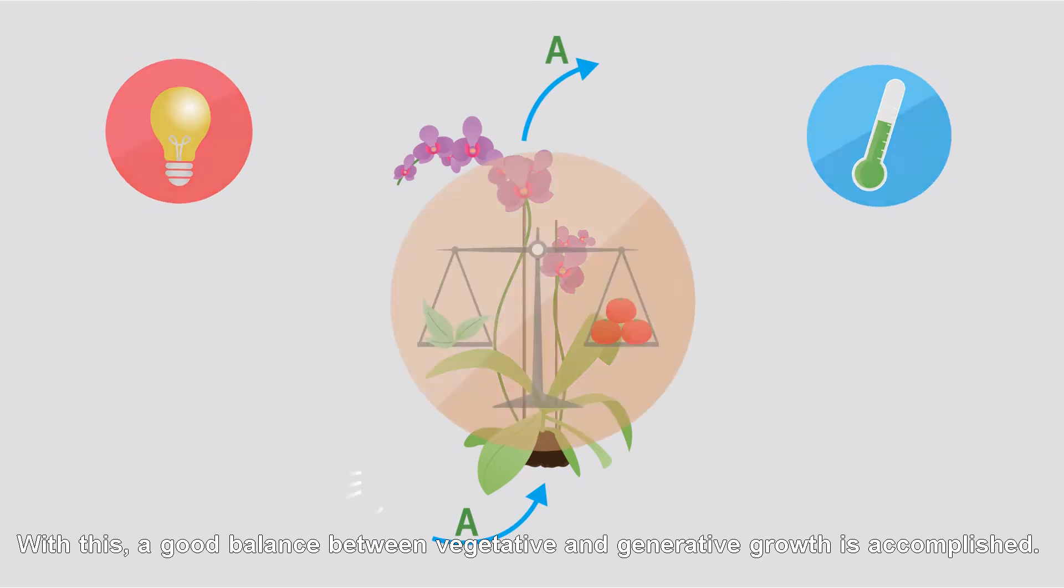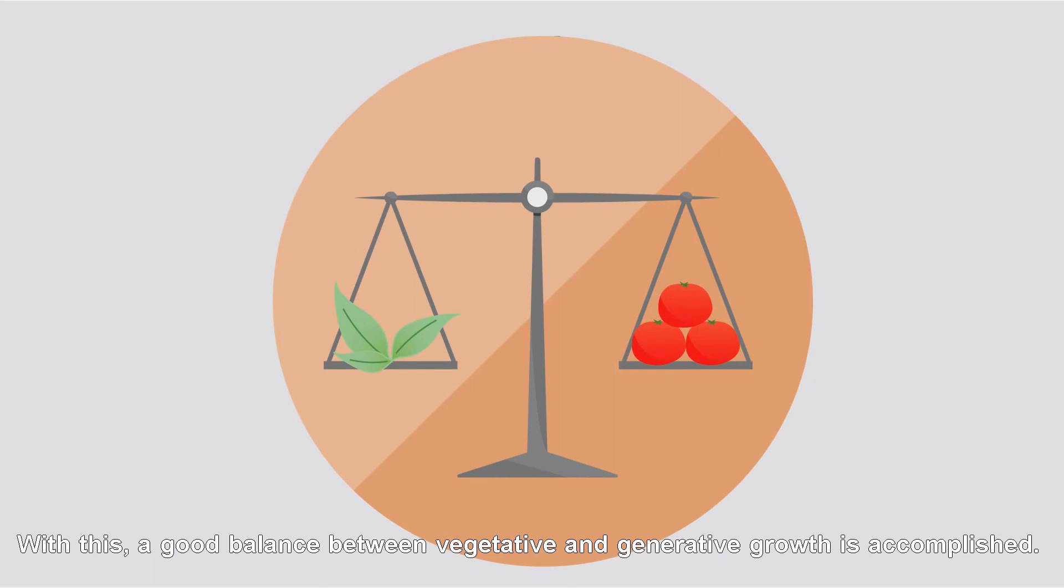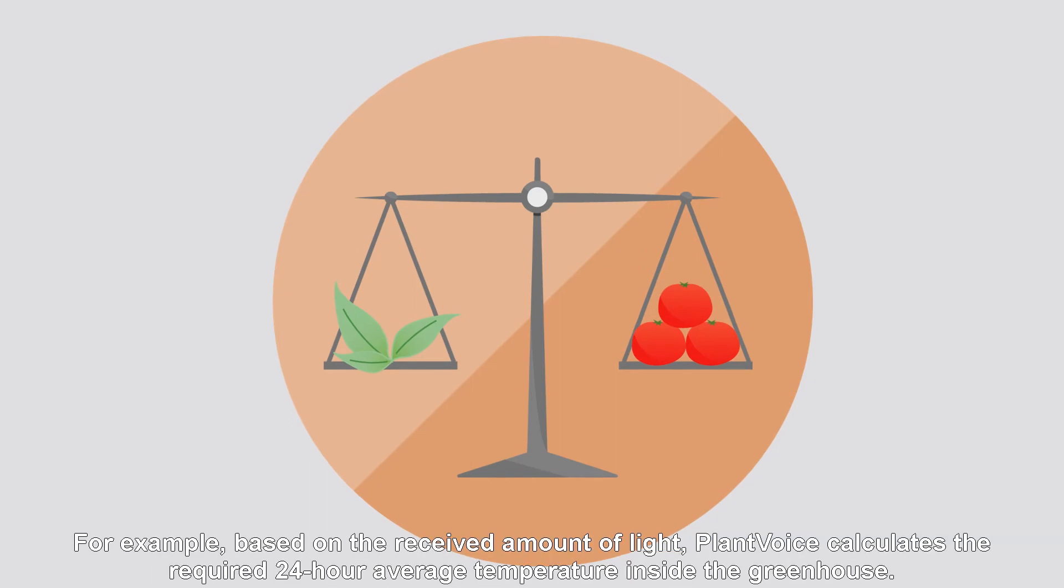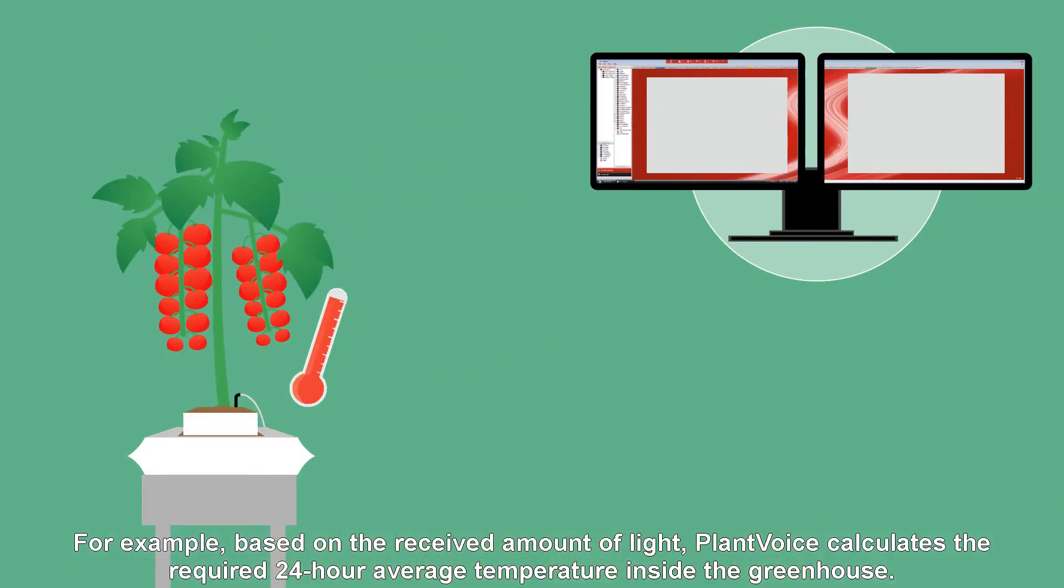With this, a good balance between vegetative and generative growth is accomplished. For example, based on the received amount of light, PlantVoice calculates the required 24-hour average temperature inside the greenhouse.